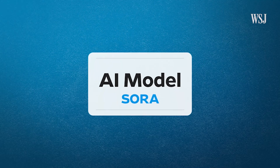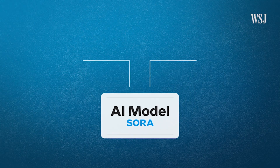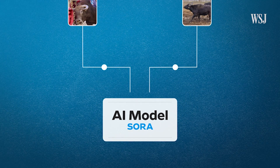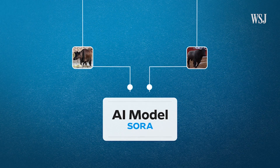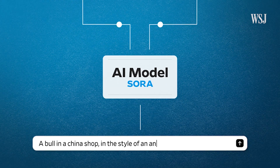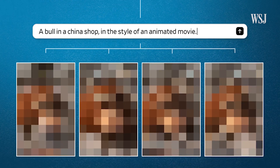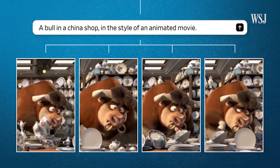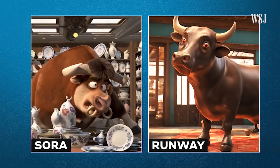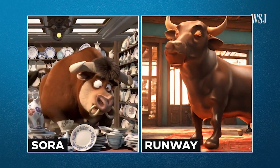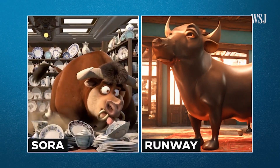How does Sora work? It's fundamentally a diffusion model, which is a type of generative model. It creates a more distilled image starting from random noise. The AI model analyzed lots of videos and learned to identify objects and actions. When given a text prompt, it creates a scene by defining the timeline and adding detail to each frame.